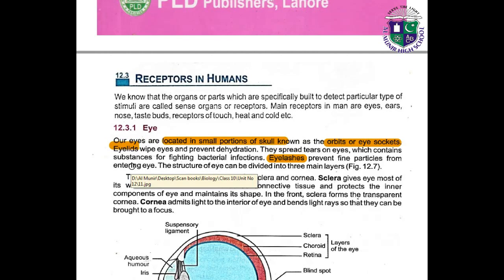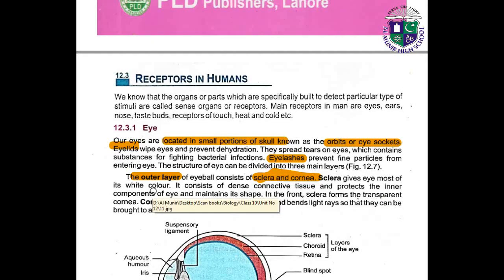The structure of the eye is divided into three main layers. Number one is the outer layer, which consists of the sclera and cornea. The sclera gives the eye most of its white color. It consists of dense connective tissue and protects the inner components of the eye and maintains its shape.